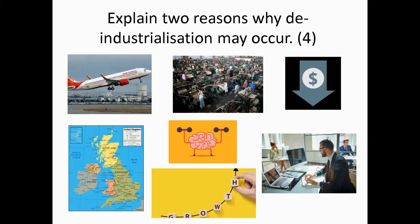Let's look at a question from paper one, topic three — all about the challenges of an urban world. This question is asking you to explain two reasons why de-industrialization may occur. The important part here is about this keyword: de-industrialization, meaning the closing down of industry or factories. This tends to happen in developed countries across the world, such as the UK. I've given you two different reasons why industry in developed countries might be closing.